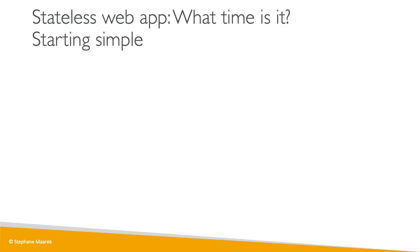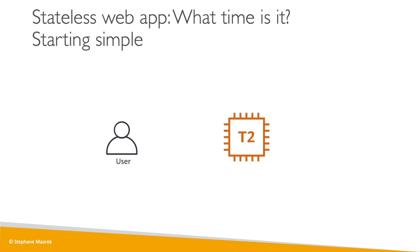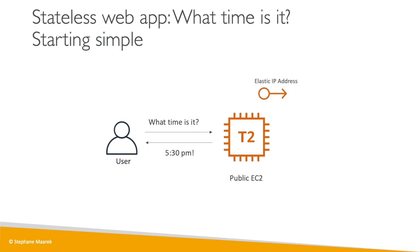Let's start from the very beginning. You're a solution architect and you have a T2 Micro instance and a user who asks what time it is — and the answer is 5:30 p.m. So we have a public EC2 instance, and because we want it to have a static IP in case something happens and we need to restart it, we attach an elastic IP address to it. This is my first POC.